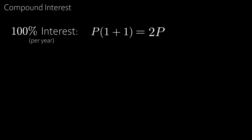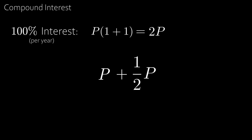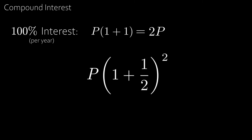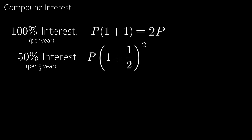For a bank that gives 50% interest every six months, we start with P, and then six months down the line we get one half P, or 50% more, and then six months after that we get 50% of the amount we already have added on top. This simplifies and factorises to P(1 + 1/2)², which is equal to 2.25 times P. So we end up with more using 50% twice rather than 100% interest once at the end of the year.